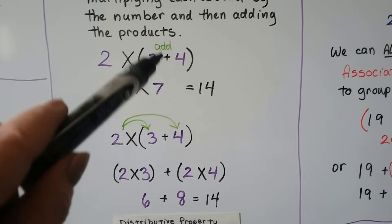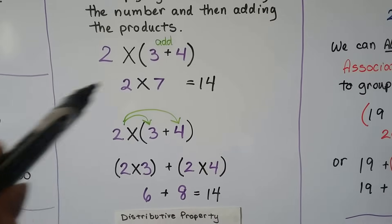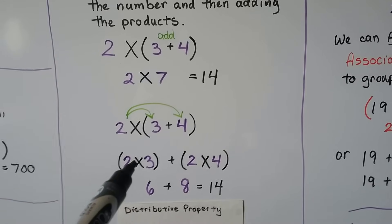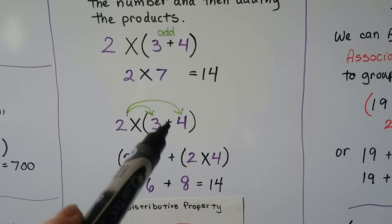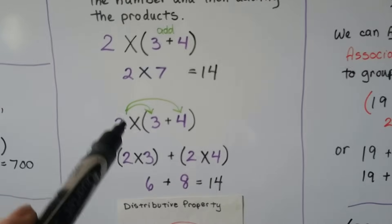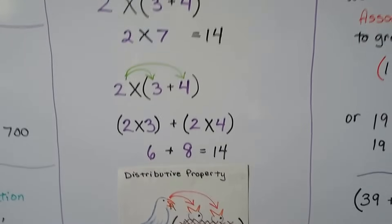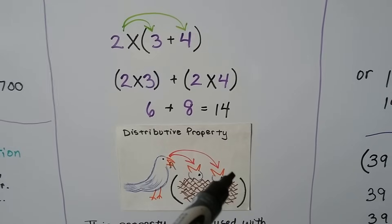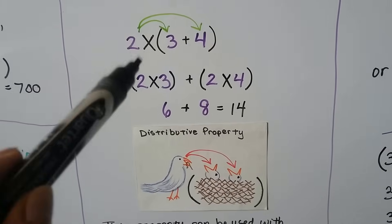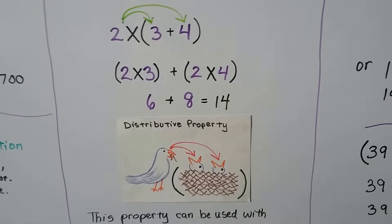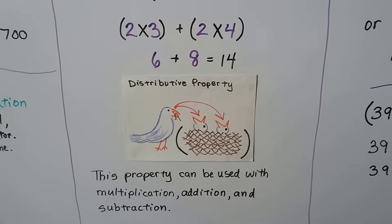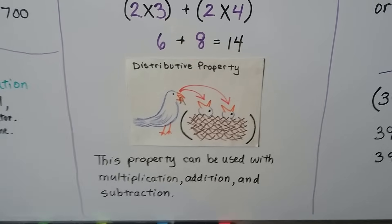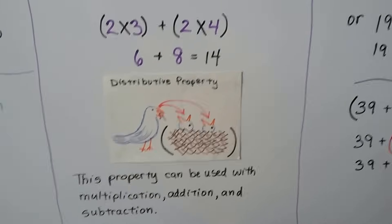We can either add what's in the parentheses and then multiply by 2 to get 14, or we can distribute the 2 to the 3, get a product, and add it — because there's an addition sign — to the product of 2 times 4. We get the same sum. It's like a mother bird going to each baby bird inside the nest; you don't miss any of the numbers inside the parentheses. This distributive property can be used with multiplication, addition, and subtraction.